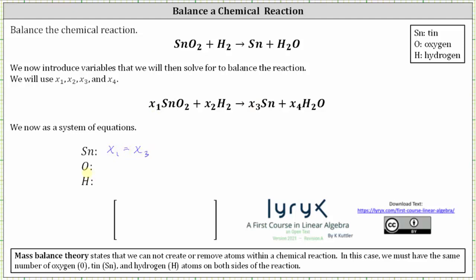Moving on to oxygen, notice how on the left we have two atoms of oxygen, and on the right we only have one. Therefore, two times x sub one must equal one times x sub four, or two x sub one must equal x sub four.